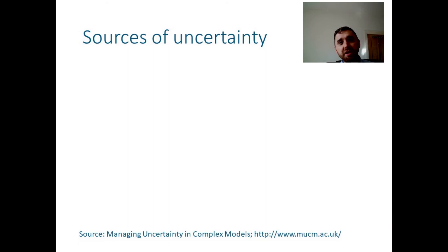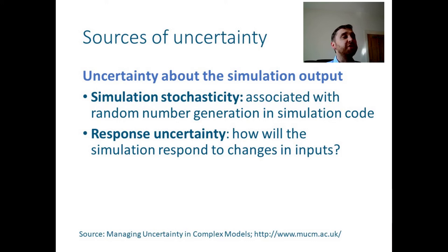Uncertainty relating to computational experiments comes from a number of sources. The first group of data-based models that relate to the simulation itself and how much we know about its behaviour. These include the extent to which the pseudo-randomness in the code translate to randomness in the output, and also our own lack of knowledge about the strength of which outputs respond to inputs.